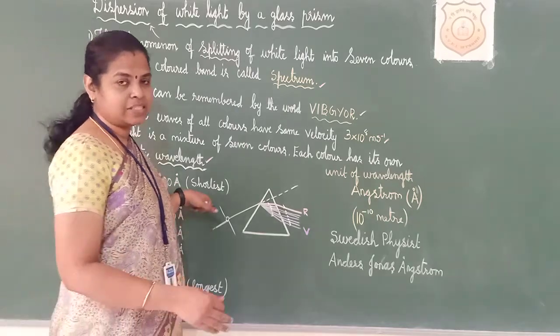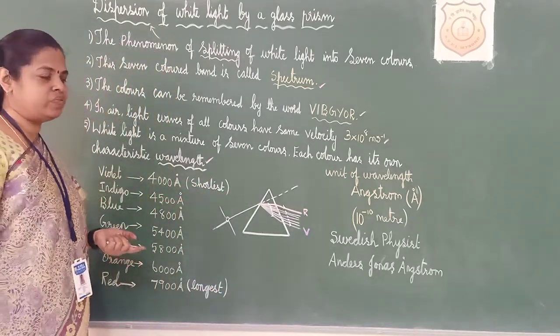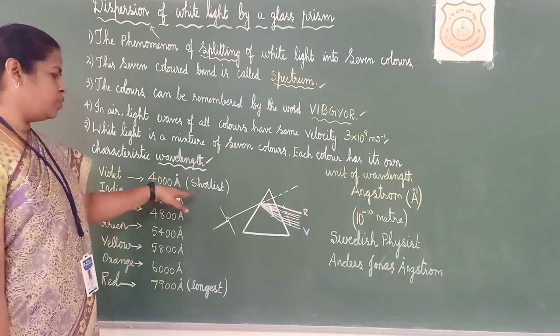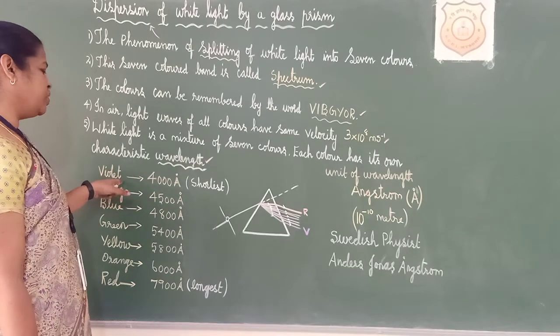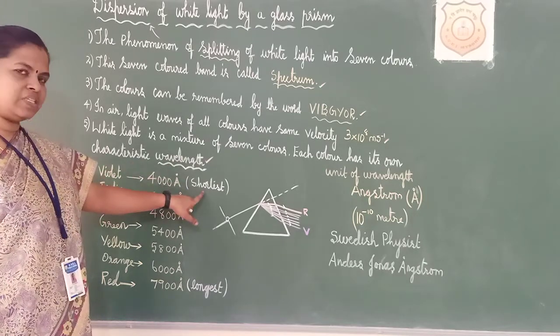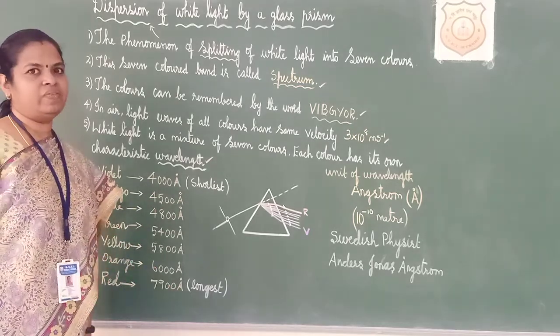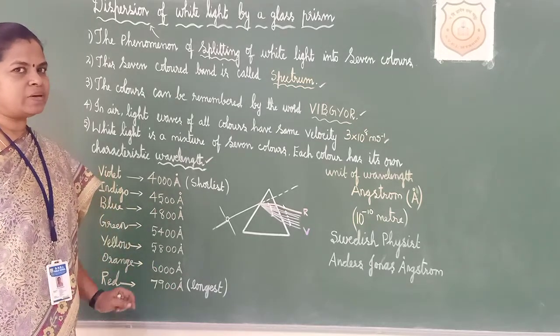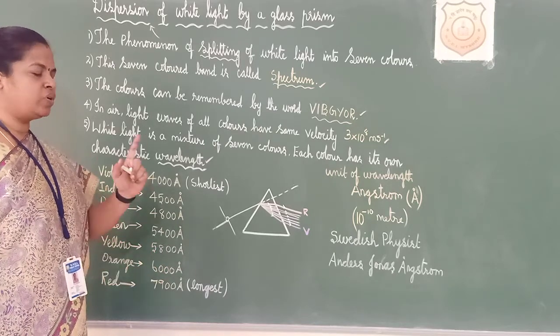Violet will be having the shortest wavelength. In the coming classes, I will be asking you about atmospheric refraction, scattering of light when we study. I will ask you which is shortest and which is longest. You should be able to answer. Violet will be having the shortest wavelength, and red will be having the longest wavelength. There should be some reason why we are using red in the signal and all.